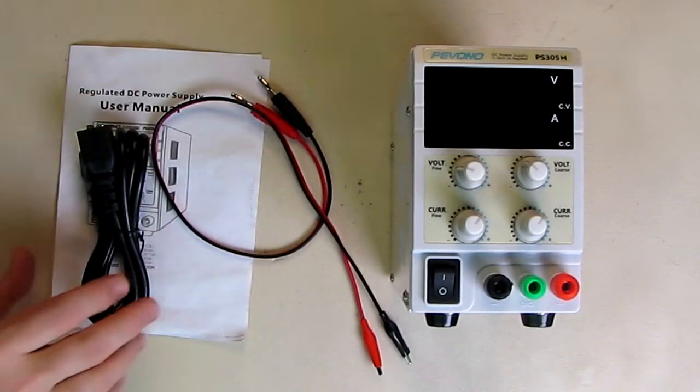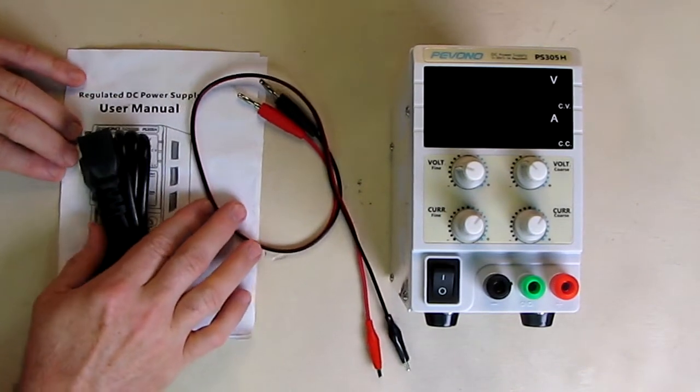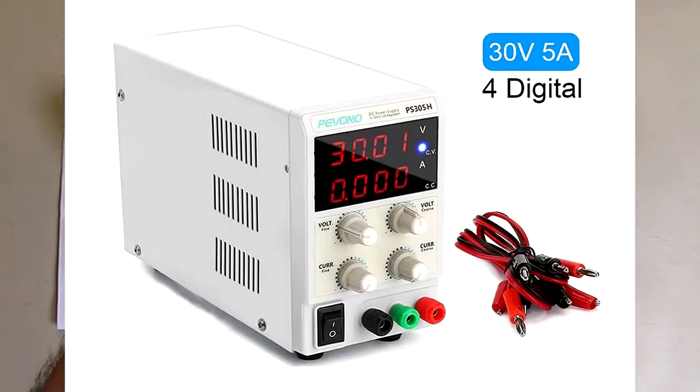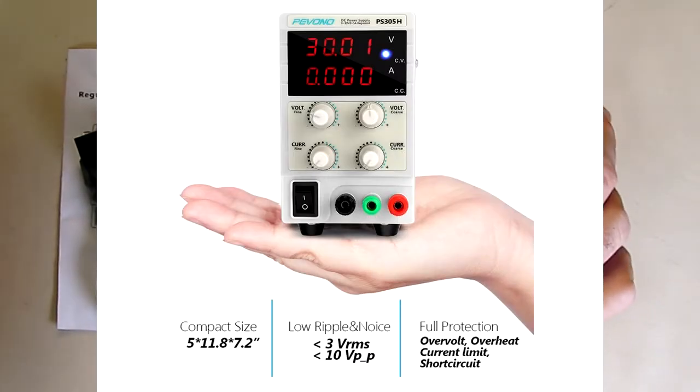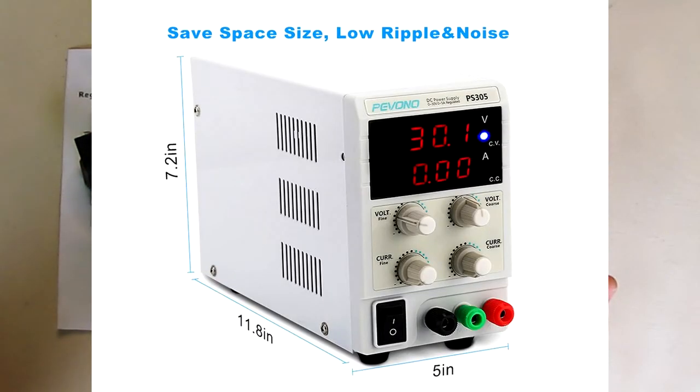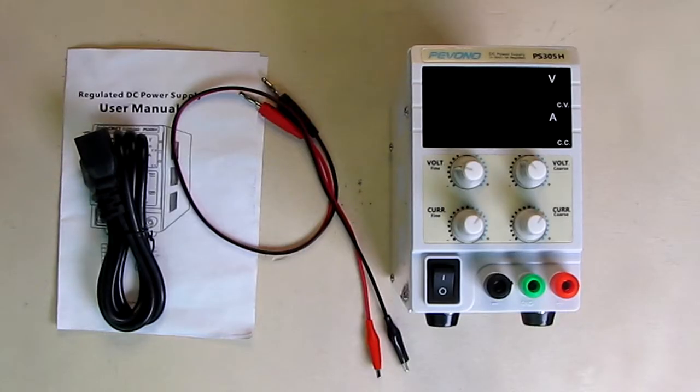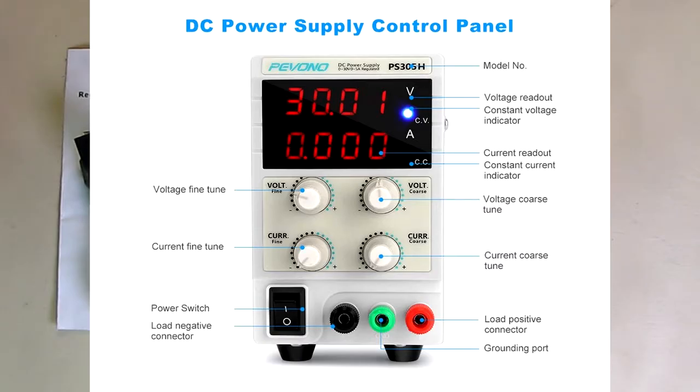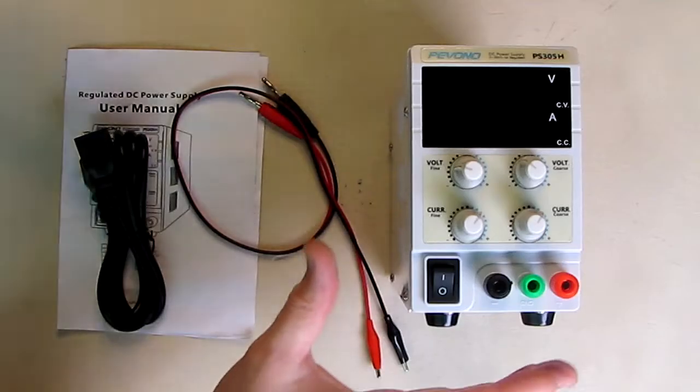Hello again, this is Robert Veach, and this is my video review of the Pivono brand PS305H DC bench power supply - 30 volts at 5 amps with a four-digit LED display. It's regulated and uses a switching supply inside to keep the weight and profile down.